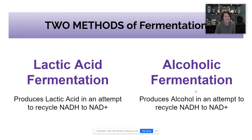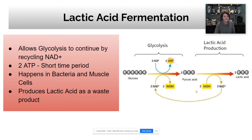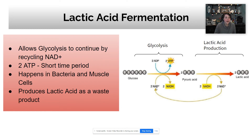Let's take a look at the two different types: lactic acid fermentation and alcoholic fermentation. In lactic acid fermentation, it allows glycolysis to continue by producing lactic acid after glycolysis happens. It takes that pyruvic acid and breaks it into lactic acid, which allows that NADH to be recycled back into NAD+, giving us two ATP.